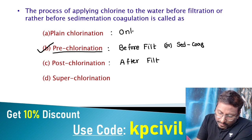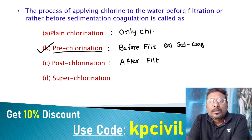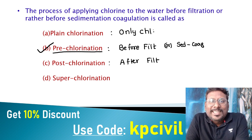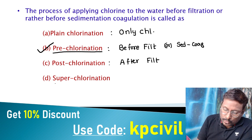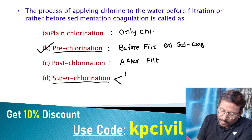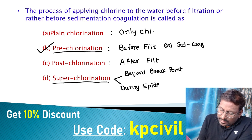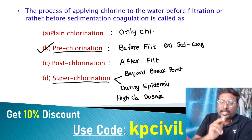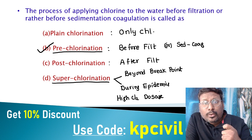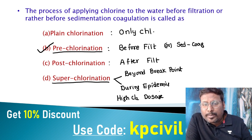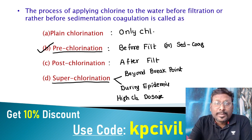If no other treatment is carried out — no filtration, no sedimentation, no coagulation, only chlorination — that is plain chlorination. Super chlorination is used under two conditions: first, addition of excess chlorine beyond the breakpoint; second, during floods or epidemics when an excess chlorine dosage is applied. Beyond breakpoint addition or very high chlorine dose during epidemics is super chlorination.